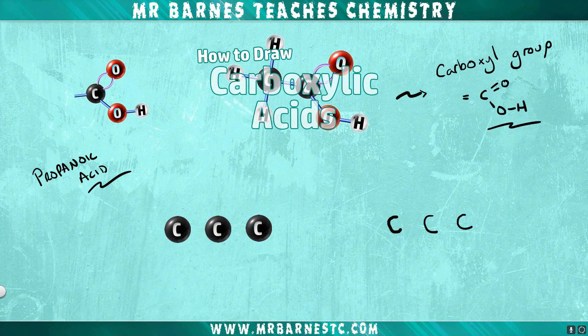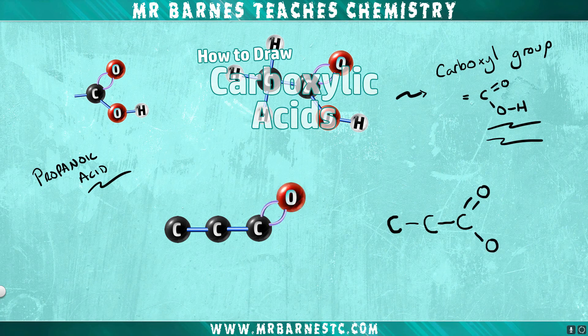Carboxylic acids all have single bonds between the carbons, so we can add these in. Then what we need to do is take that final carbon and change it to our carboxyl group, adding the double bond O and the OH onto it, as you can see here.